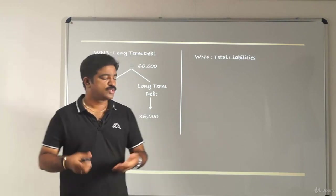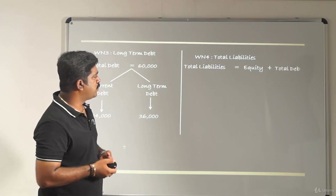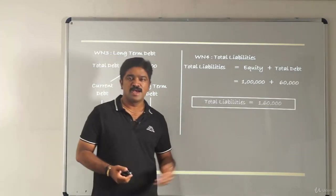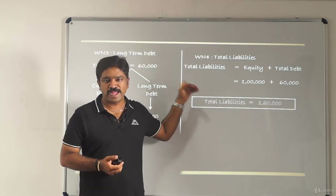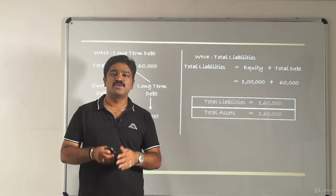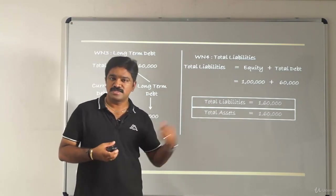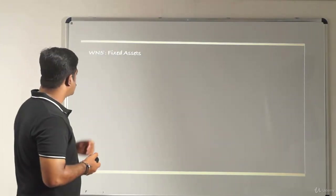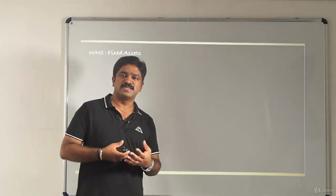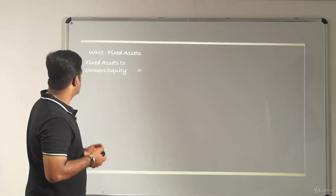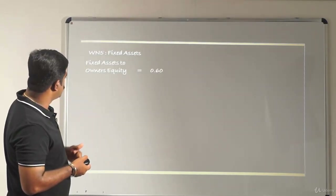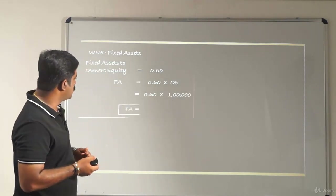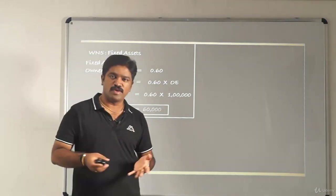Working Note 4: total liabilities equals equity plus total debt — 100,000 plus 60,000 — giving 160,000. Crucially, total liabilities equal total assets, so total assets are 160,000. Working Note 5: fixed assets to owner's equity is 0.60, so fixed assets equal 60% of 100,000, which is 60,000.